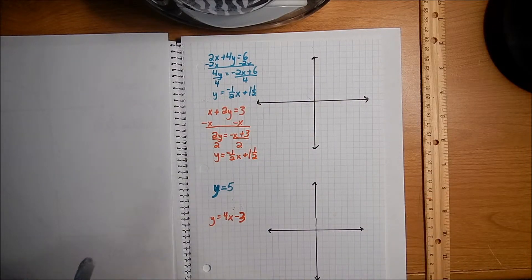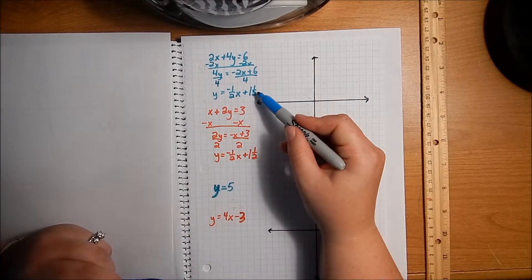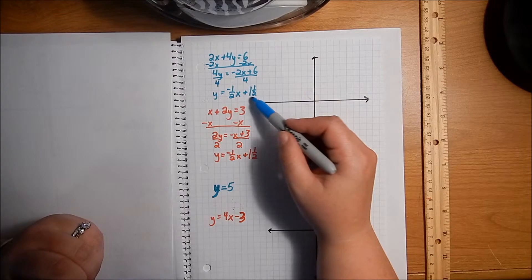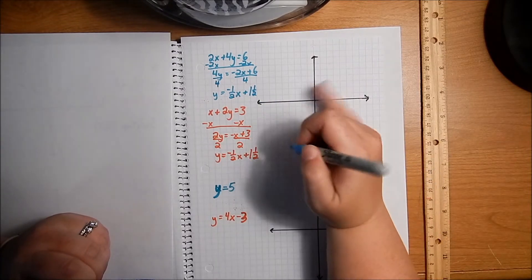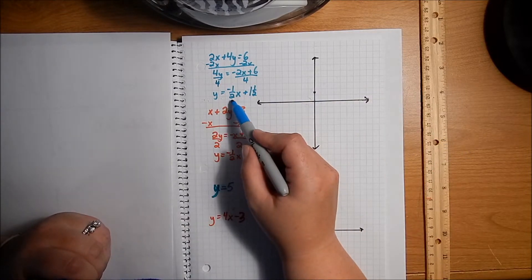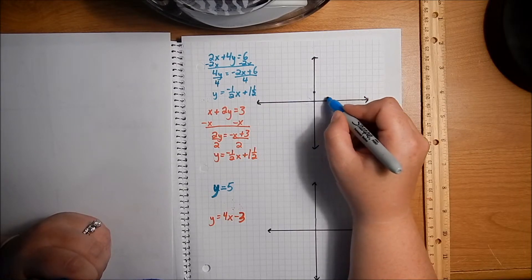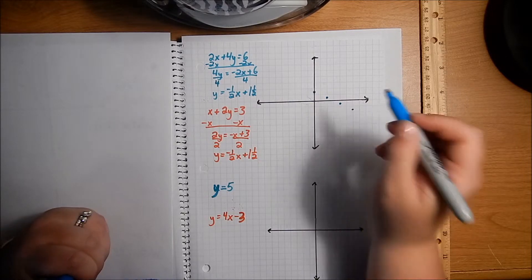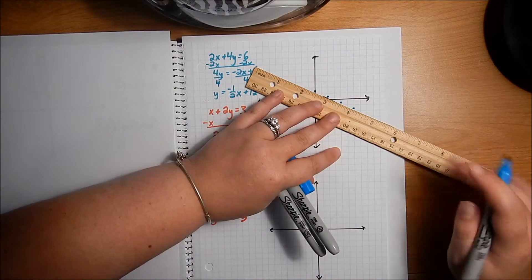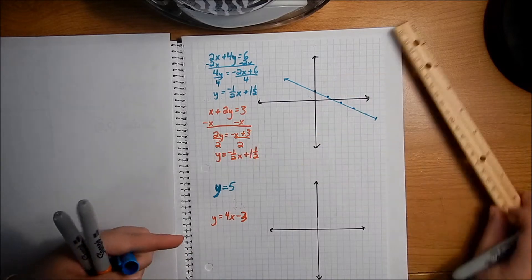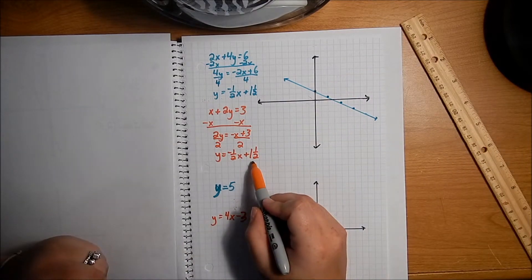Let's go ahead and graph these. It's a little inconvenient starting at 1 and a half, and that is one of the limitations of graphing — when I don't have an integer it's a little weird. But a half isn't so bad. So 1 and a half is right about there, and then I go down 1 unit to the right 2 units. I connect those dots and then do the orange one, also starting at 1 and a half, following the same slope.